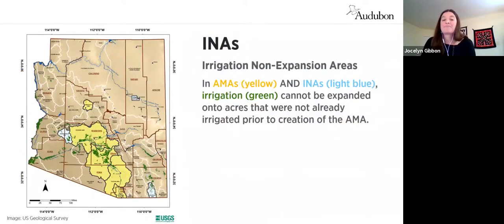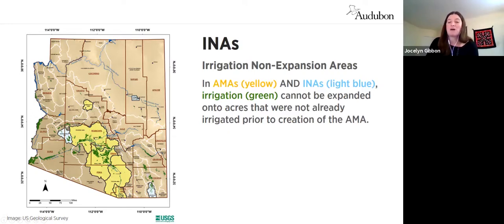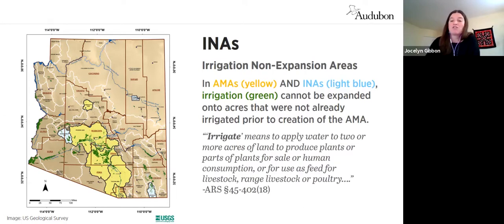Arizona's three INAs have way fewer tools or requirements compared to AMAs, but there is that big one: in INAs, as in AMAs, irrigation cannot be expanded onto new land after creation of the INA. Irrigation in this context essentially means using water to grow crops on two or more acres for sale, for people to eat, or for animal feed.